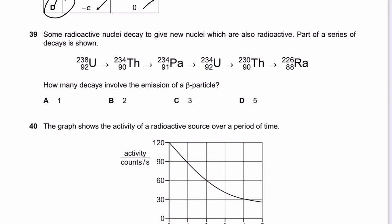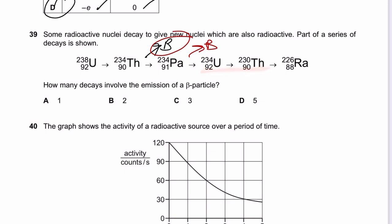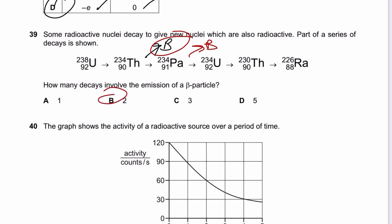Question 39: A radioactive decay series is shown. Going from atomic number 92 to 90 — loss of 2 protons — means alpha emission. From 90 to 91 — gain of proton number — means beta emission. From 91 to 92 — another beta emission. From 92 to 90 — another alpha. From 90 to 88 — another alpha. Counting beta emissions: two. The answer is B.